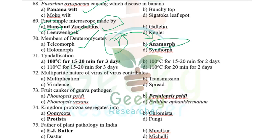Tyndallization was given by John Tyndall for killing endospores. Endospores are produced by bacteria like Bacillus and Clostridium under unfavorable conditions and are highly resistant to heat, surviving up to 100°C. The procedure of tyndallization: 100°C for 15–20 minutes for three consecutive days — heating day after day on three consecutive days.